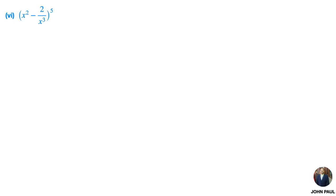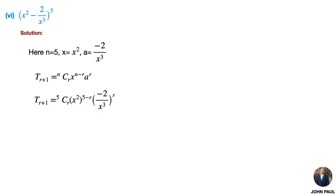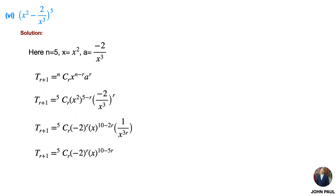Sixth problem: (x² − 2/x³)⁵. Solution: here n, x, and a values are written. Using the general term formula and substituting, we get 5Cr · x²^(5−r) · (−2/x³)^r, that is 5Cr · (−2)^r · x^(10−5r).